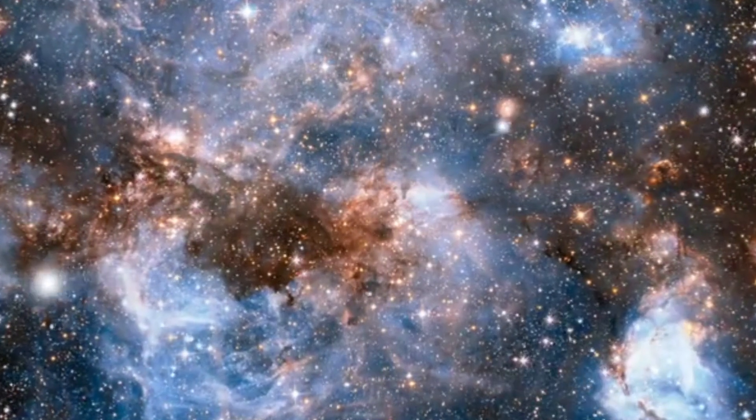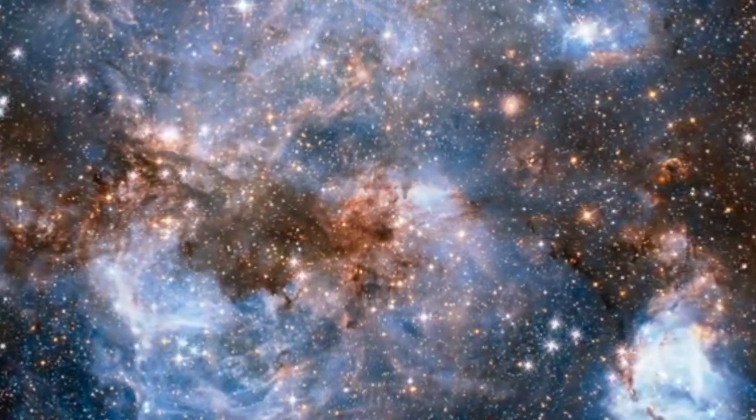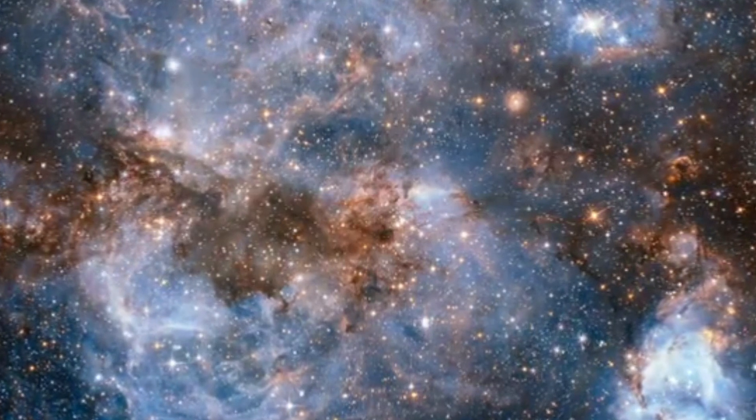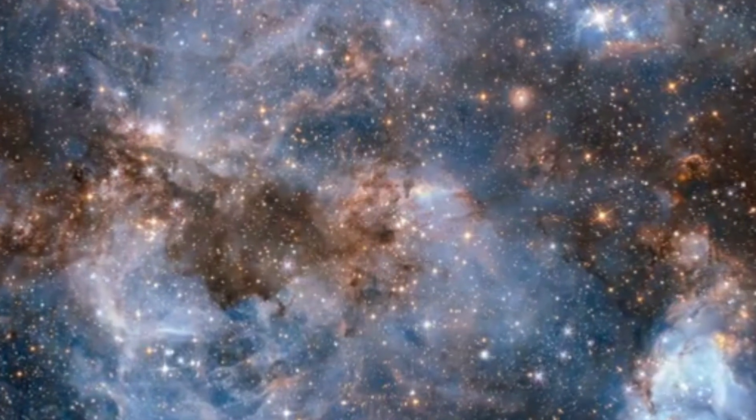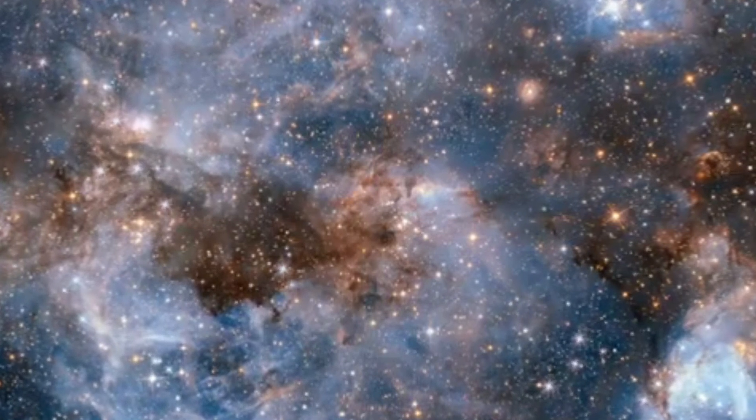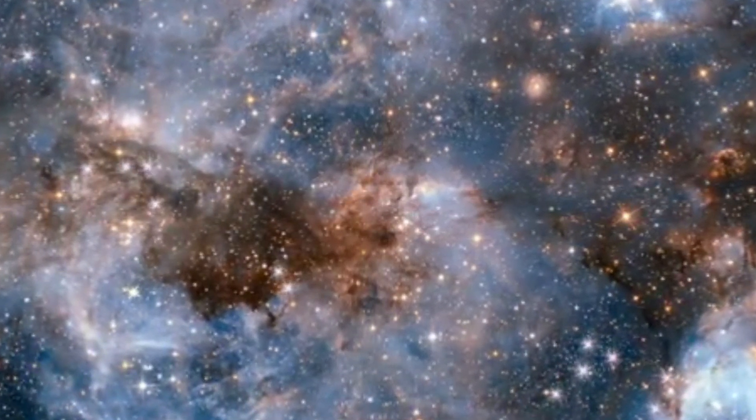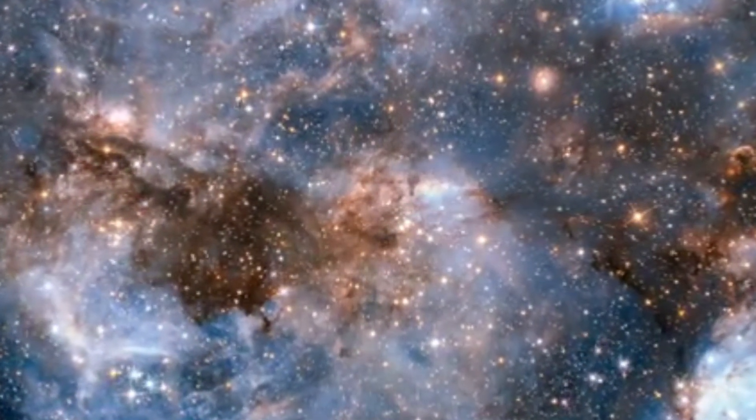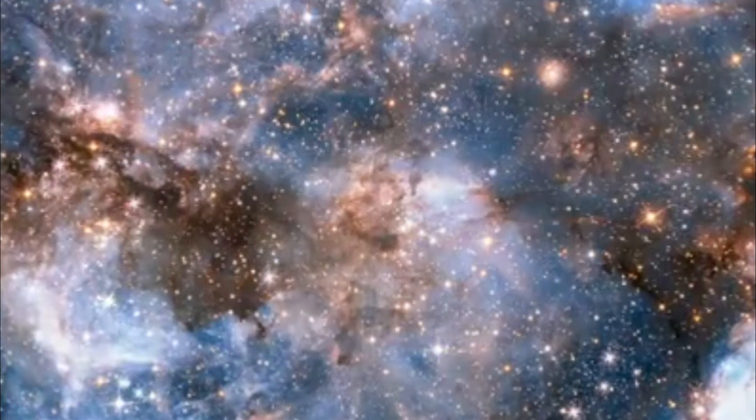For now, the extreme brightness of these early galaxies is causing astronomers to rethink their assumptions about the earliest stars. While galaxies that are very bright are usually very massive, it could be that these early bright galaxies aren't that massive, they're just full of population three stars.